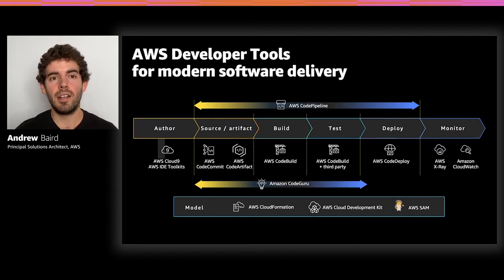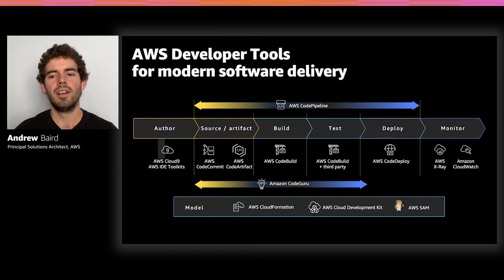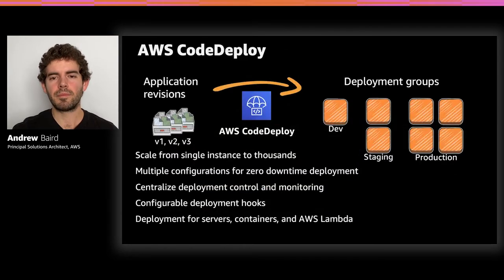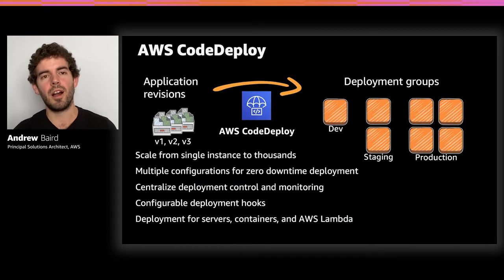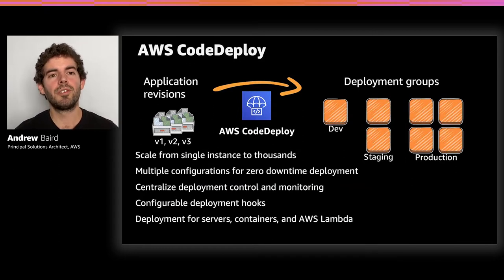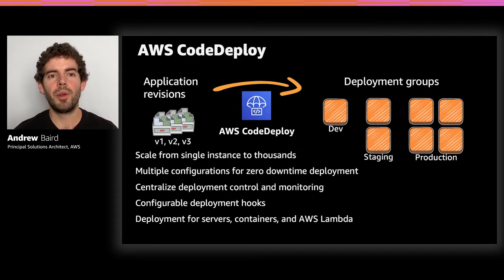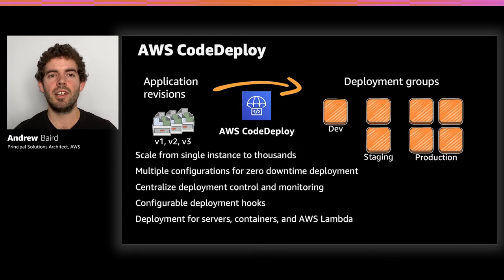AWS has service-native capabilities for each moment in the SDLC to bring additional automation, enhancements, better visibility, and transparency throughout your application's lifecycle. But today, since we're talking deployment, the service we're mostly going to focus on is AWS CodeDeploy. CodeDeploy is the service that helps take those deployable artifacts or changes that need to occur in a running environment and helps instrument those changes taking place.